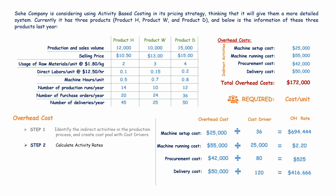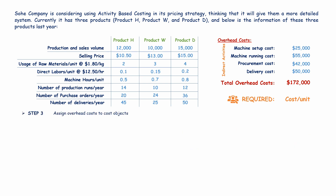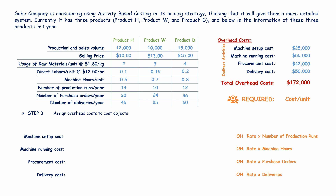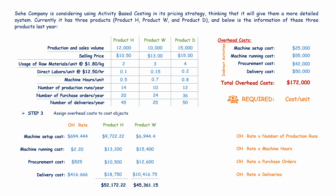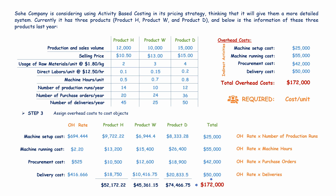Now that we know the overhead rate for each activity, step three is to assign or allocate overhead costs to each product. To assign overhead costs, we multiply the overhead rate by the number of its cost driver. We create a table with columns for overhead costs, allocation for product H, allocation for product W, allocation for product D, and total overhead cost per activity. We must verify that the total allocated to each activity equals the total overhead cost for that activity.